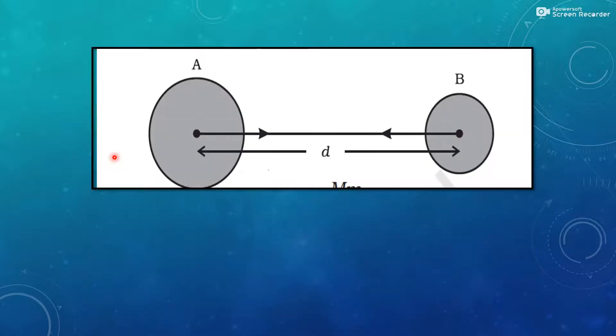Now, to understand more about force, we have to understand first the universal law of gravitation. For that, we have to consider two objects A and B and the distance between them is D. The distance which we consider here is not the distance between the objects, but the distance from their center.